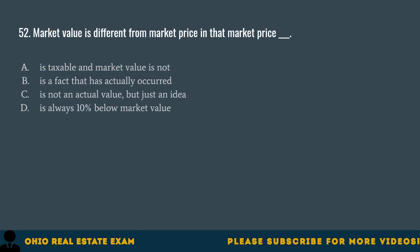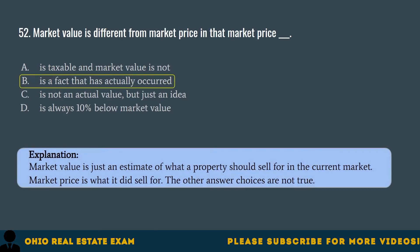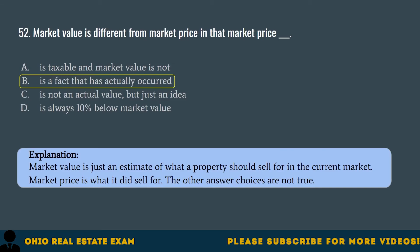Question 52. Market value is different from market price in that market price... A. Is taxable and market value is not. B. Is a fact that has actually occurred. C. Is not an actual value, but just an idea. D. Is always 10% below market value. The correct answer is B. Is a fact that has actually occurred. Market value is just an estimate of what a property should sell for in the current market. Market price is what it actually sold for.